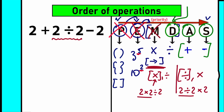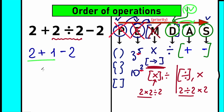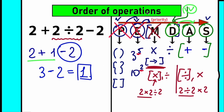Right now let's perform the division first. So we have 2 plus — and 2 divided by 2 equals 1 — minus 2. We complete our division part. We move forward to the next step: addition and subtraction. So we have 2 plus 1 equal to 3, and then 3 minus 2 equal to 1. In terms of PEMDAS, 1 is the correct answer.